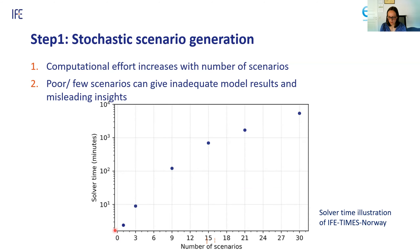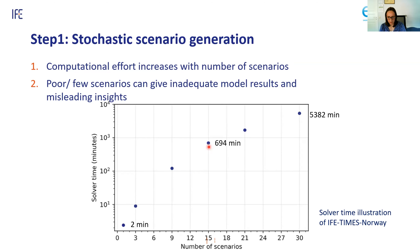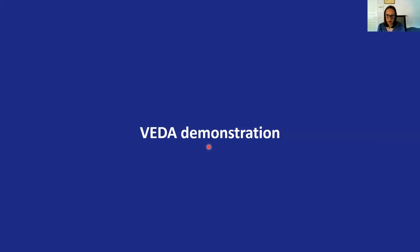Using few scenarios can give poor solutions, but the computational effort increases with more scenarios. If we have a deterministic model with one scenario, it takes two minutes to run. With 15 scenarios, it takes 694 minutes. With 30 scenarios, it can take over 5,000 minutes — about four days. That's the dilemma: we want to use as many scenarios as possible to give a good representation of the uncertainty, but our computational effort increases accordingly.